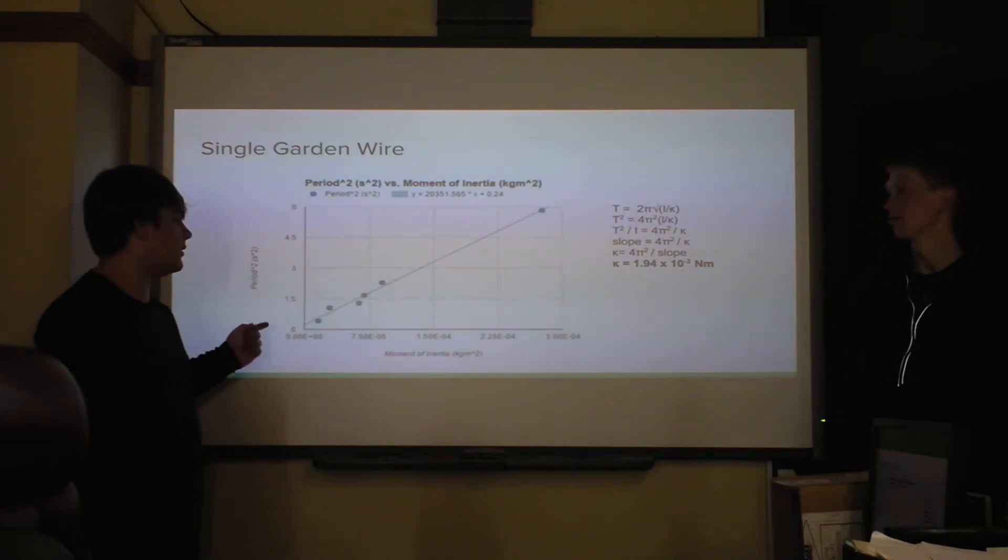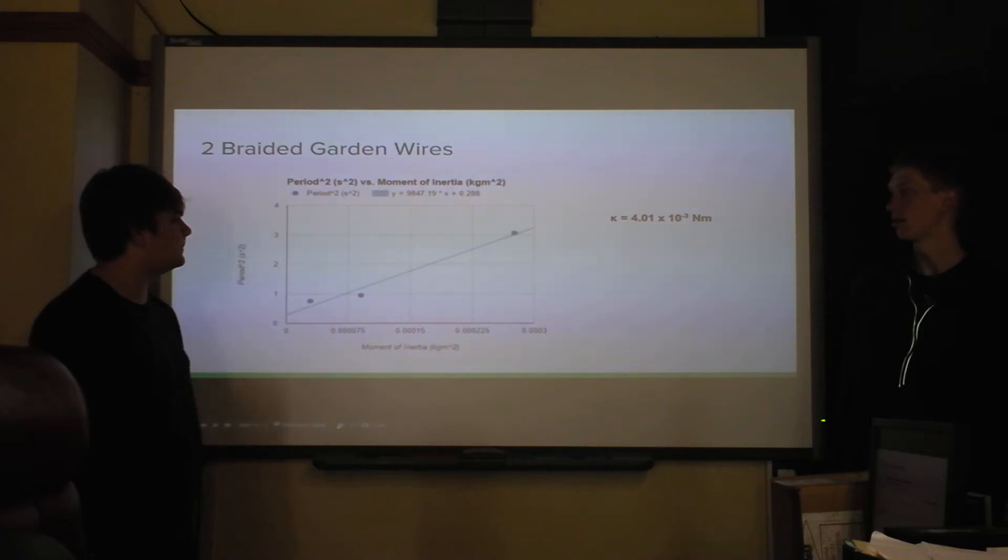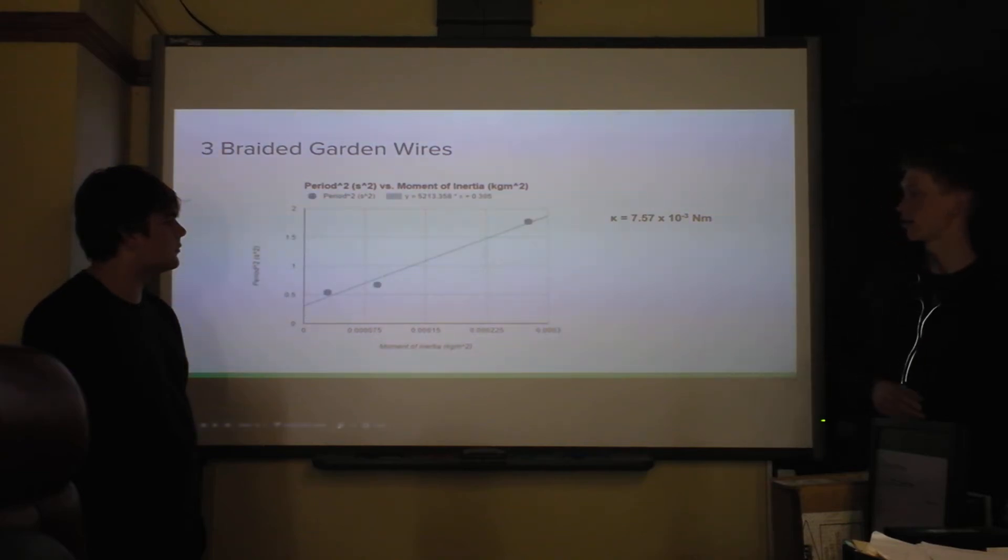And then we repeated the same experiment, but with two garden wires braided together, and the torsion constant increased here. And then for three, it also increased. And we did the same procedure to find the torsion constant.